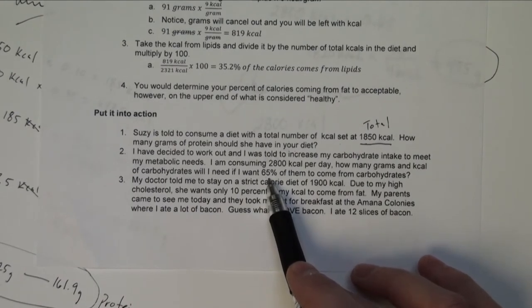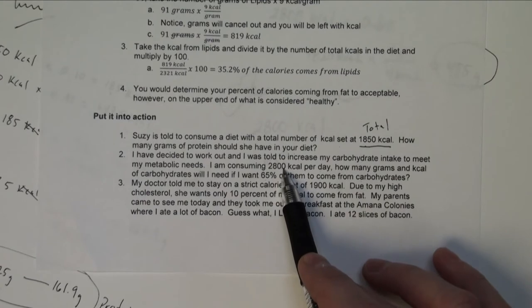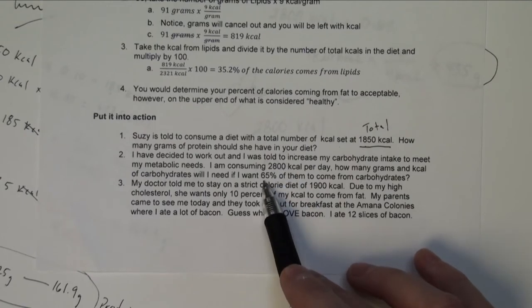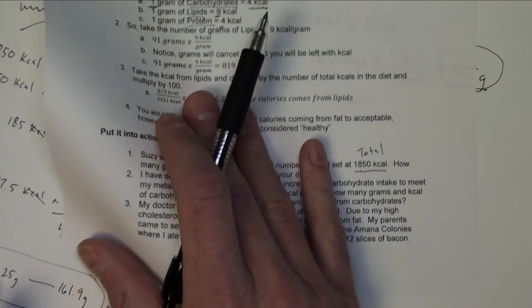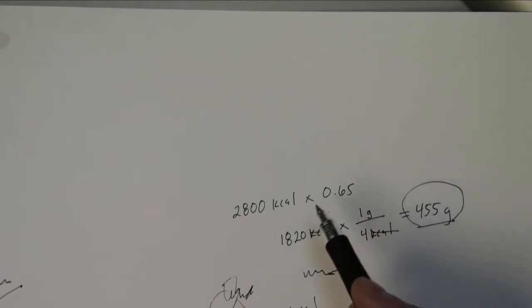So here we're going to aim for a particular number of calories. So our total number again here is 2,800. So we have to be concerned about that number, and so we actually want to figure out 65% of that.